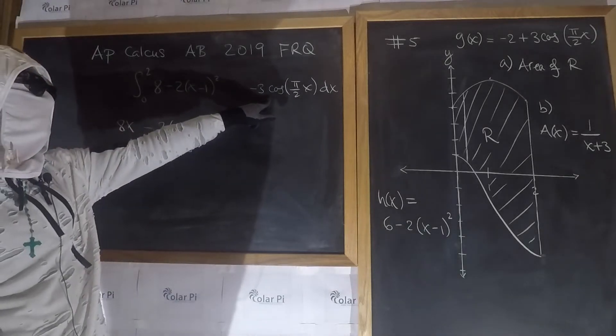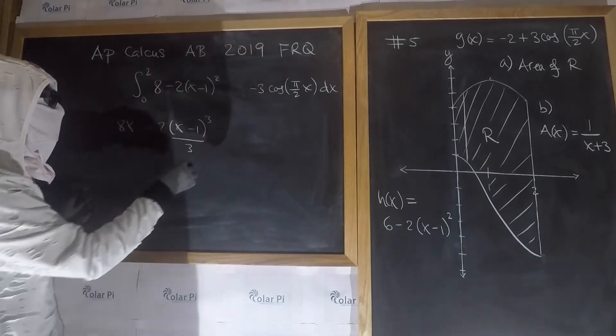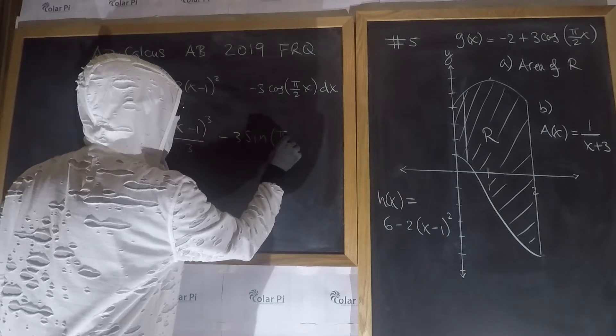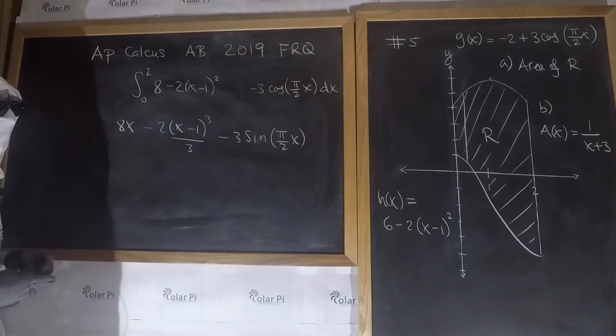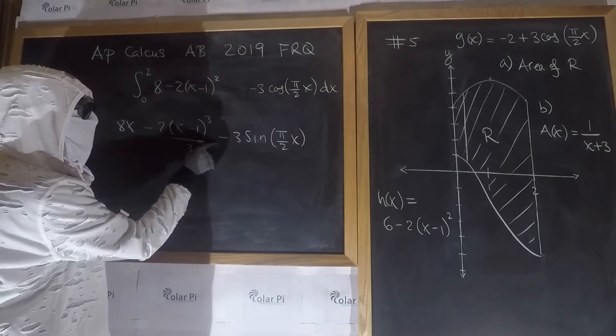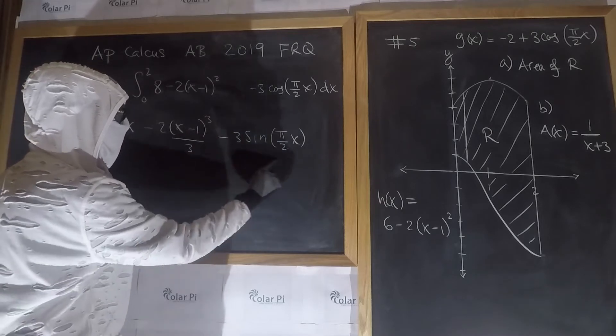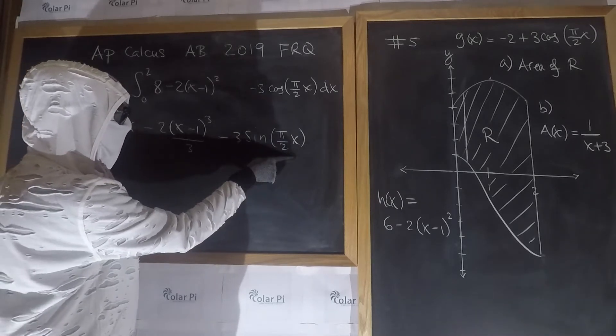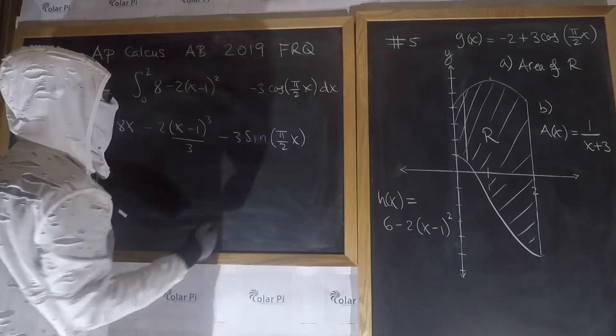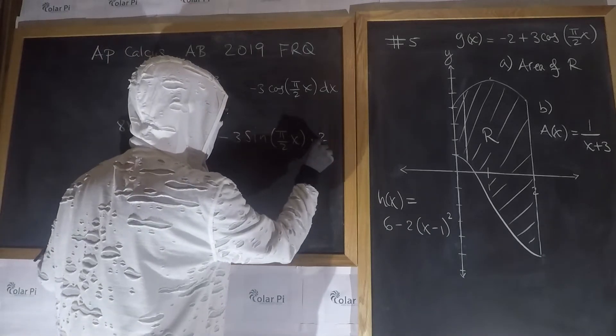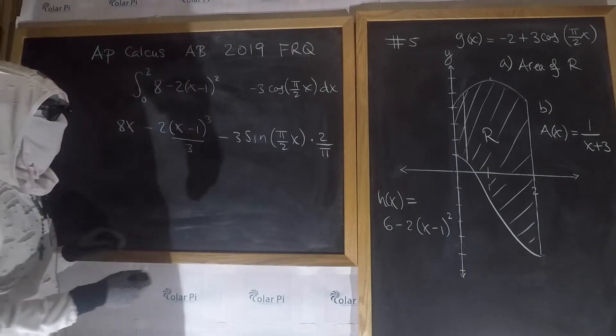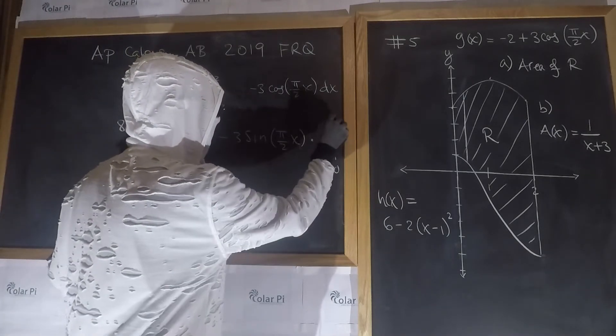The antiderivative of cosine is sine, because the derivative of sine is cosine. So we have negative 3 times sine of pi over 2x, but not quite. Because if we take the derivative of this, we're going to get 3 times cosine times pi over 2, but there is no pi over 2 here. So to make up for it, I need to multiply this by 2 over pi, which is like dividing by pi over 2. Then, of course, I need to evaluate this from 0 to 2.